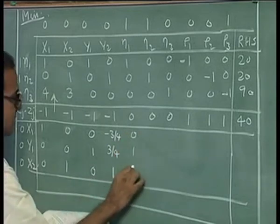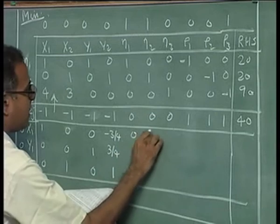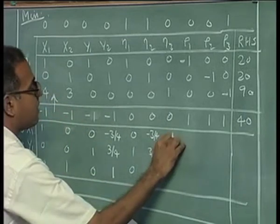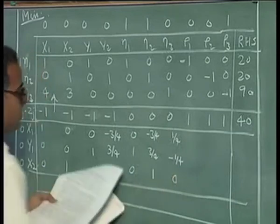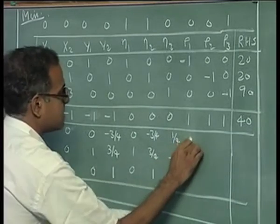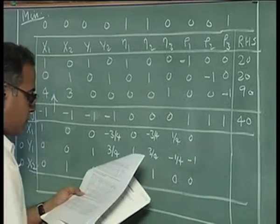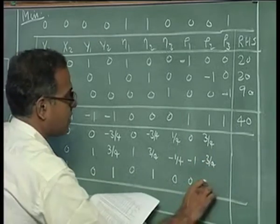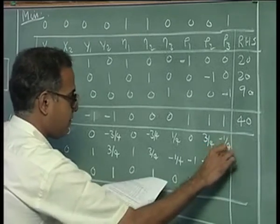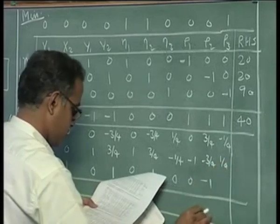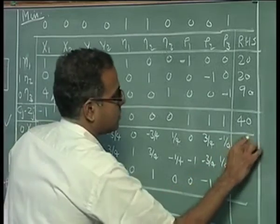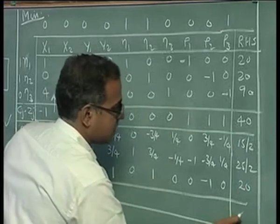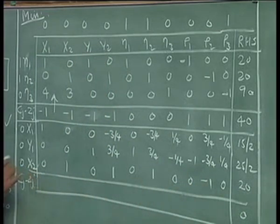Eta1, eta3, 1 by 4 minus 1 by 4, 0, rho1 0 minus 1, 0, rho2 3 by 4 minus 3 by 4 minus 1, rho3 1 by 4 minus 1 by 4, 1 by 4, 0, 15 by 2, 25 by 2 and 20 with z equal to 0.